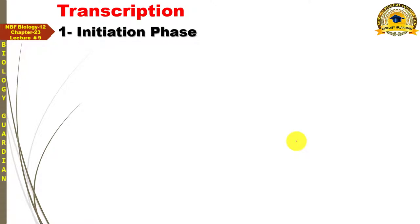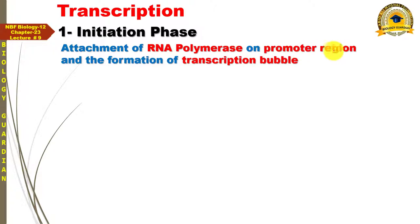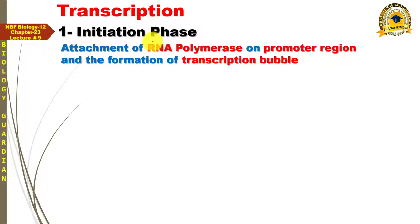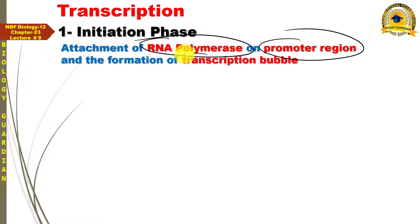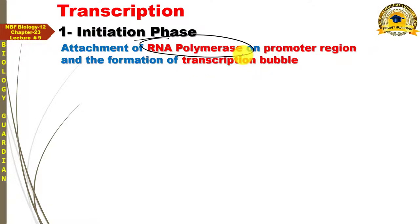سب سے پہلا event: initiation phase۔ Initiation phase is characterized by the attachment of RNA polymerase on the promoter region and the formation of transcription bubble۔ ہم نے یہاں تین چیزیں discuss کرنی ہیں: RNA polymerase، promoter region، اور transcription bubble۔ سب سے پہلے RNA polymerase کیا چیز ہے یہ سمجھتے ہیں۔